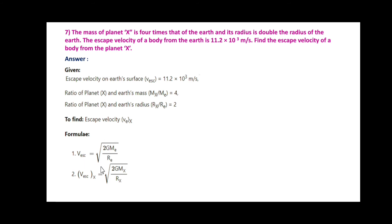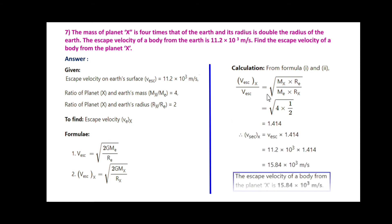Formula: Vescape = √(2GME/RE) and VescapeX = √(2GMX/RX). From these two equations: VescapeX/Vescape = √(2MX·RE/ME·RX). Substitute the values 4 × 1/2, which gives √2 = 1.414.